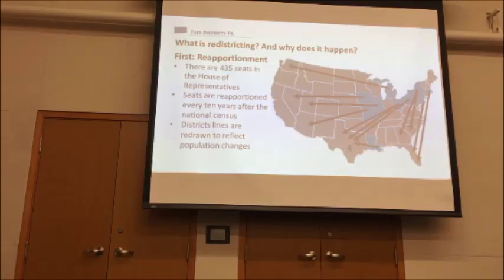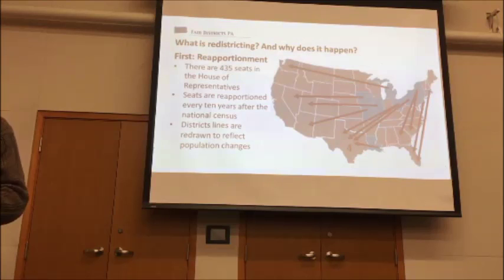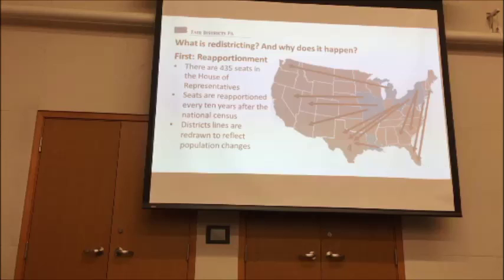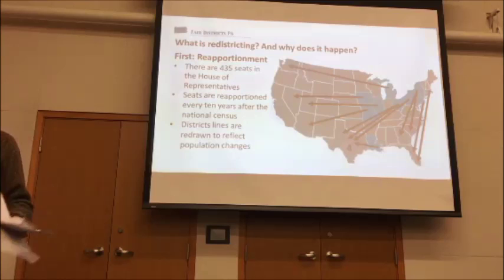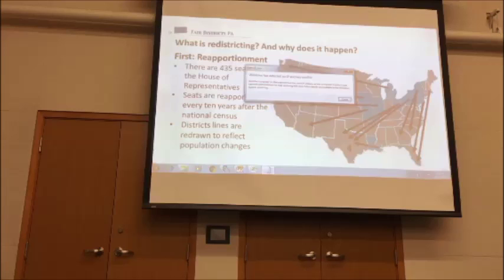As population moves from one area to another, representation has to be adjusted to keep everything in alignment. For example, Texas, with an increase in population relative to other states, picked up four representatives after the 2010 census. This took effect starting in 2012. The states highlighted in blue lost representation — Pennsylvania lost one district, and our neighbors in Ohio and New York both lost two districts.